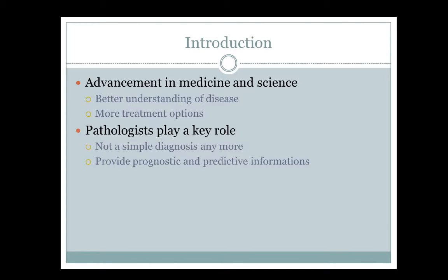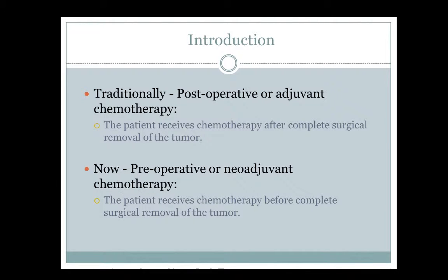Pathologists' roles have changed throughout this process. Before, you would just call it breast cancer because there were not many treatment options. When we were renovating our old library, I pulled some old reports from the 1970s — a breast cancer report was just a couple of lines. But now it's like a couple of pages. You can't just say 'it's cancer' — you have to give all the other information because it's clinically very useful. Traditionally you take out the cancer and give adjuvant chemotherapy; now with neoadjuvant chemotherapy, you give the chemo first, then do the surgery.